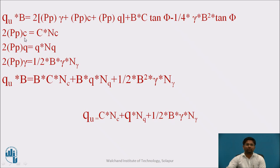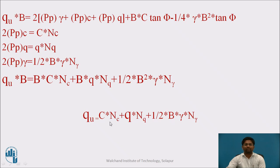Let us consider: 2PP with respect to cohesion equals C·Nc; 2PP with respect to surcharge weight equals Q·Nq; and 2PP with respect to unit weight of soil sample equals (1/2)·B·gamma·Ngamma. Here Nc, Nq, and Ngamma are bearing capacity factors. When substituting bearing capacity factors, the 1/4 and B·C·tan phi terms become ignorable. Substituting all values: qu·B = B·C·Nc + B·Q·Nq + (1/2)·B²·gamma·Ngamma. Cancelling the common term B, the final equation is: qu = C·Nc + Q·Nq + (1/2)·B·gamma·Ngamma, where Q is the overburden pressure at the base of footing, C is cohesion of soil, B is width, gamma is unit weight of soil sample, and Nc, Nq, Ngamma are Terzaghi's bearing capacity factors.